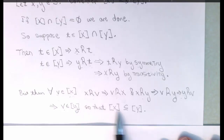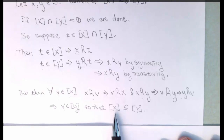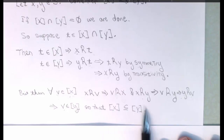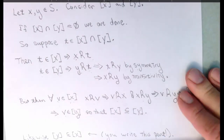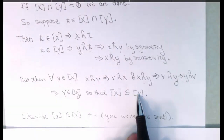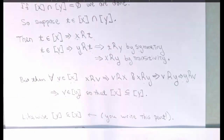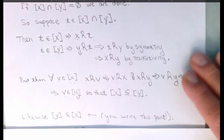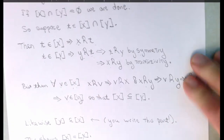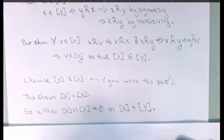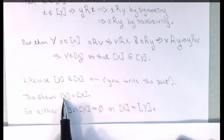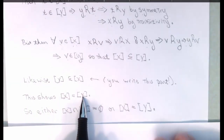That shows that, thinking of these now as subsets of S, the set of elements equivalent to X is a subset of the elements that are equivalent to Y. You can prove the opposite inclusion — that the equivalence class of Y is a subset of the equivalence class of X — in exactly this way; I'll let you write that part of the proof. This shows, then, that the equivalence class of X is equal to the equivalence class of Y.